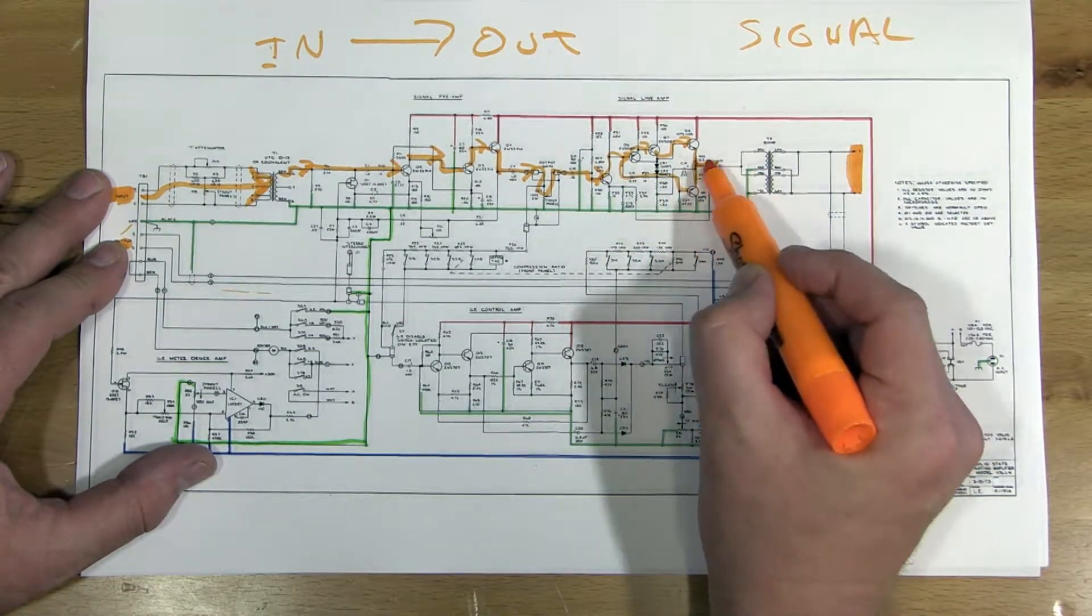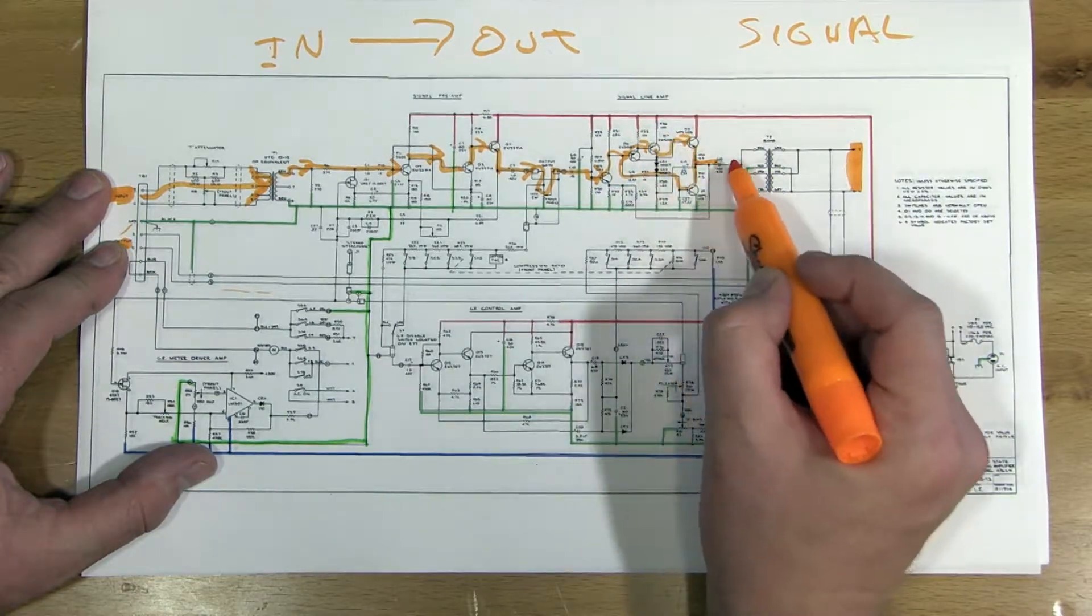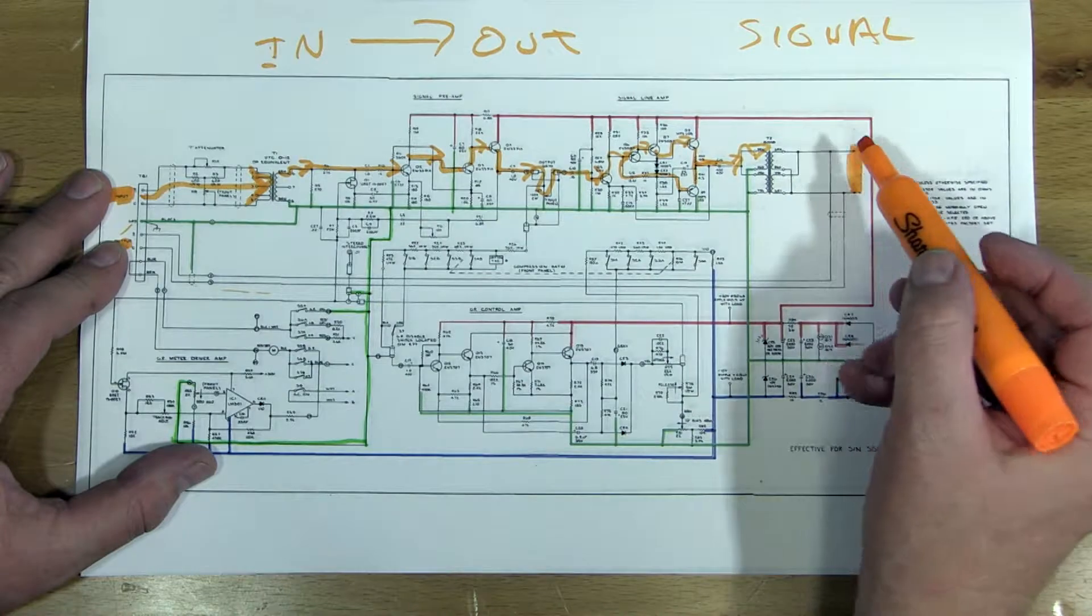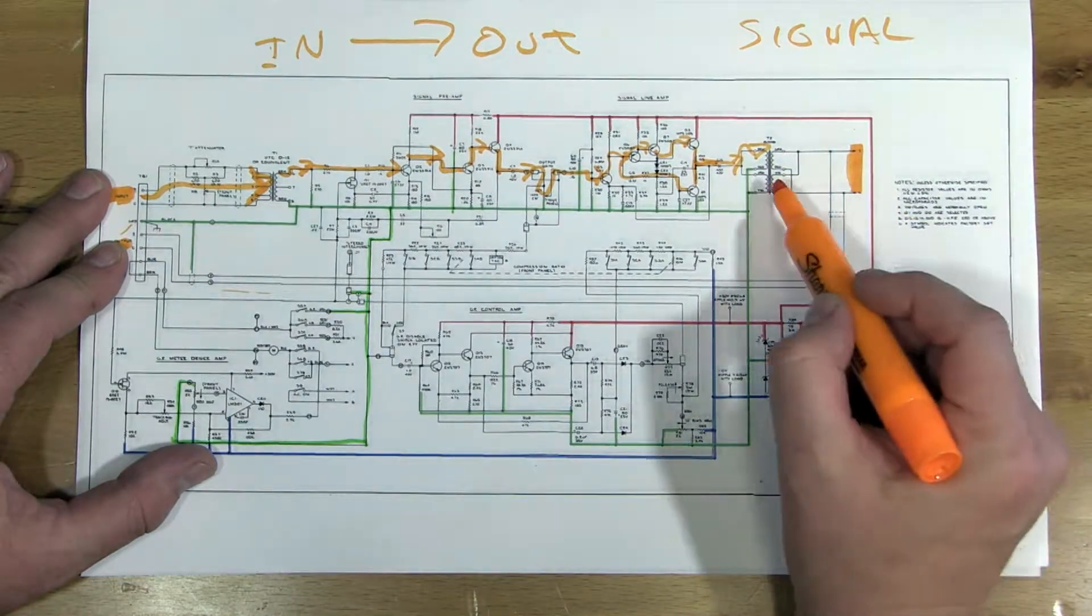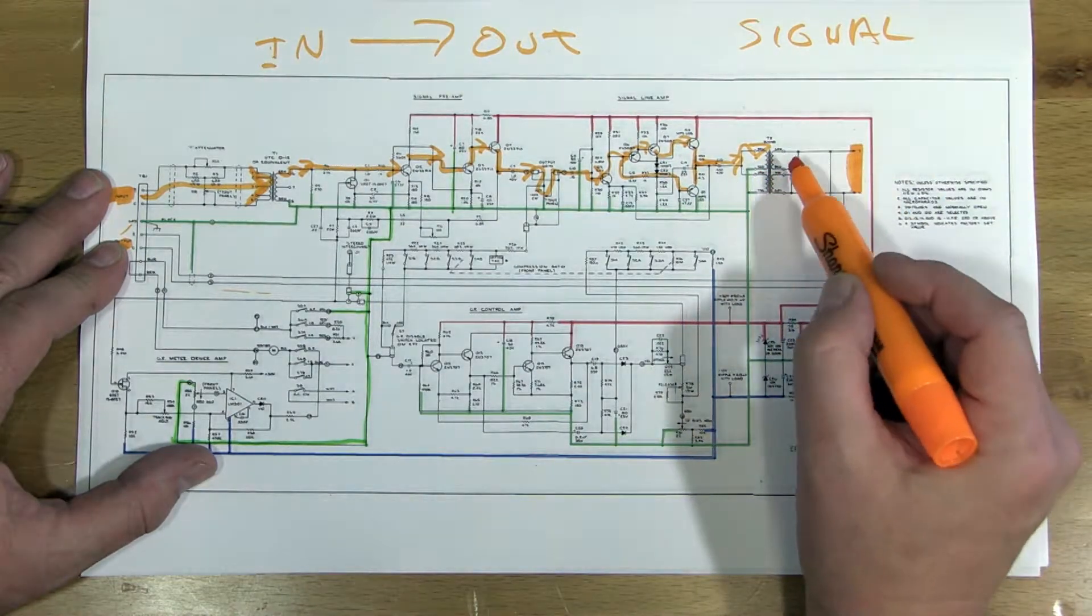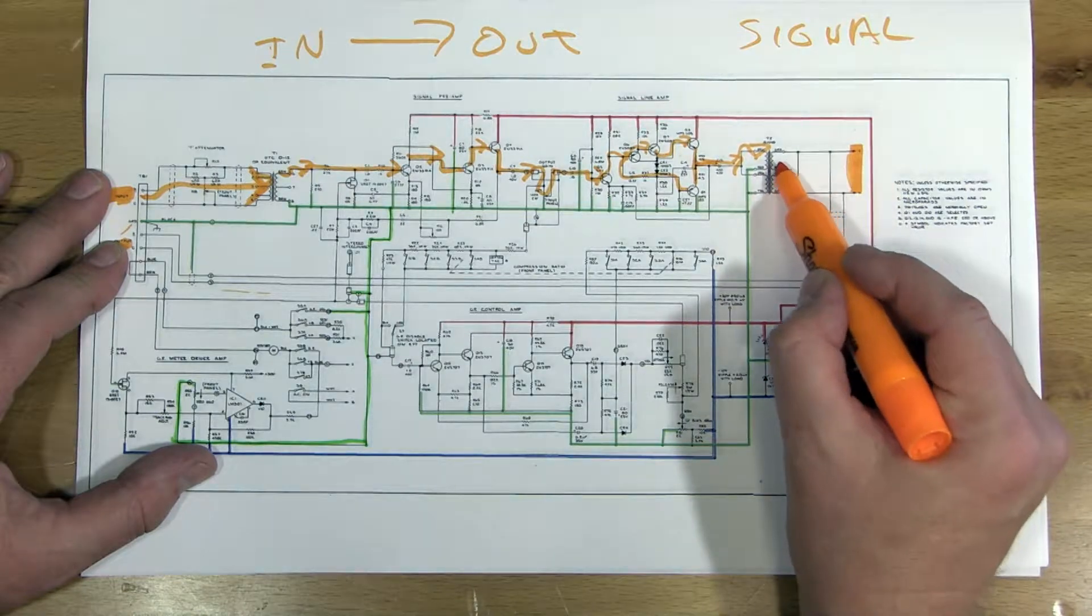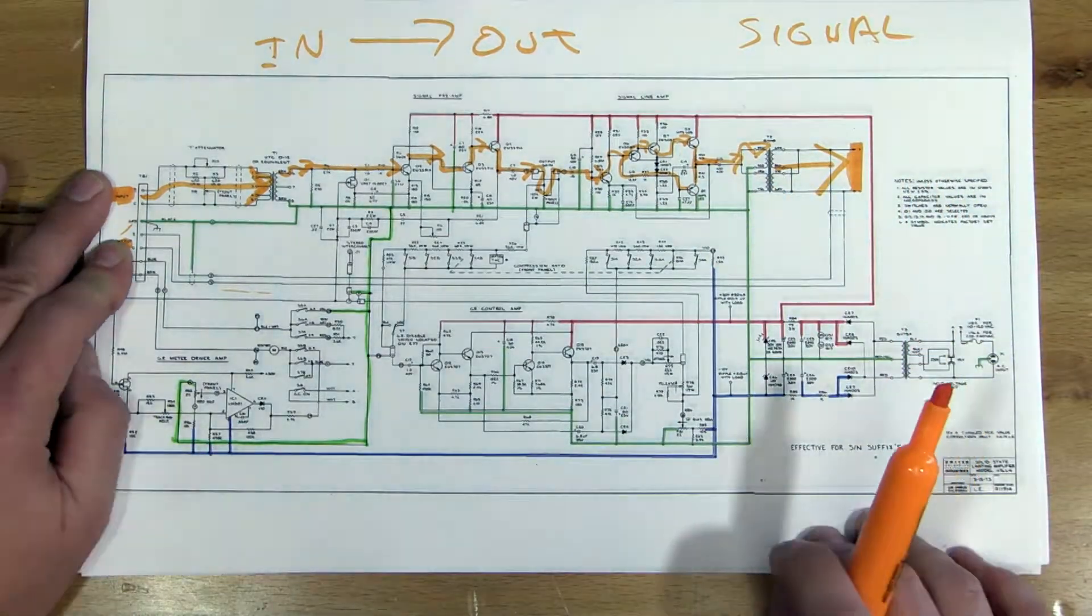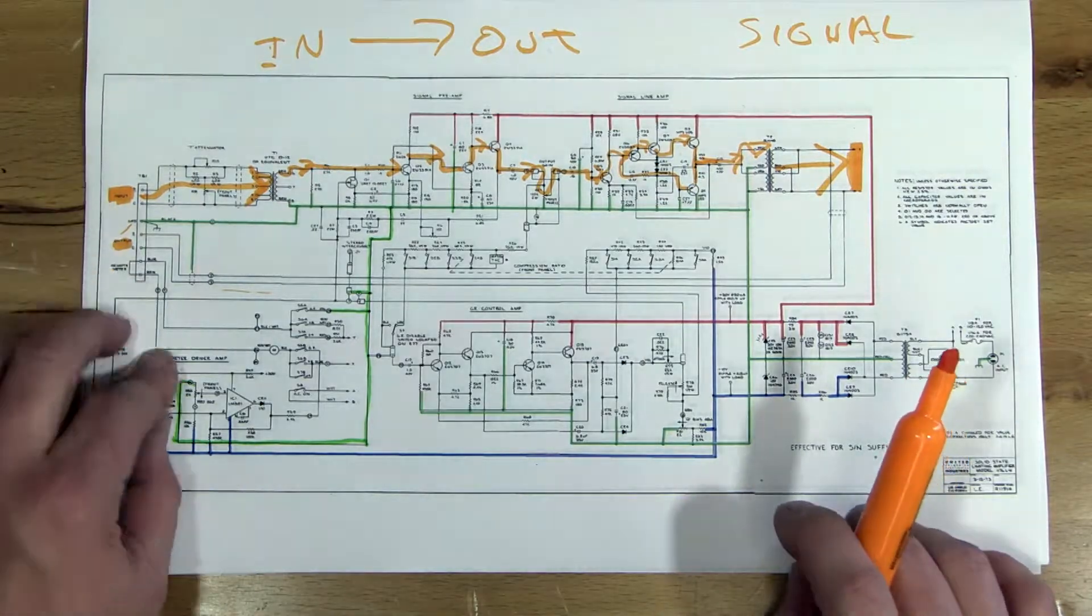And here it's a push-pull, so it goes through. It has two different paths. And then it goes to the transformer. And then the bottom of the transformer is grounded. And again, I would just say the secondary transformer is where it comes out. So that's our signal path.